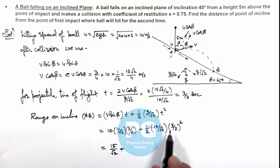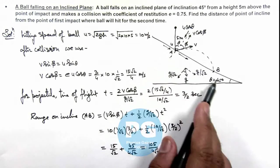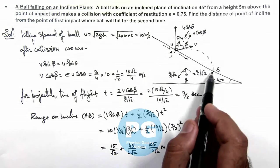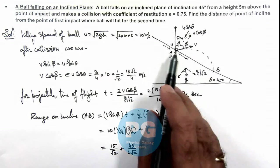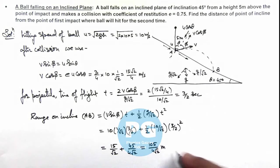This value will be 90/2, which is 45/4√2. On further simplifying, we get the total range as 105/(4√2) meters. This is the range on incline and the distance of the point on the incline from the point of first impact where it will land again. This is the result of this problem.